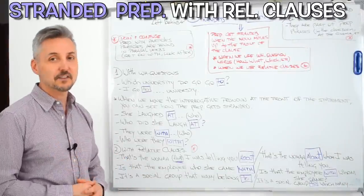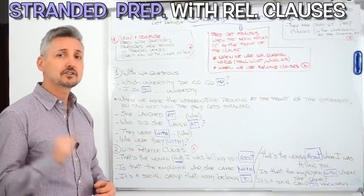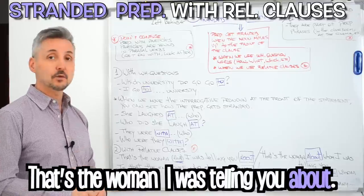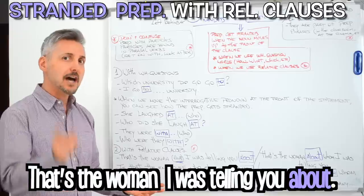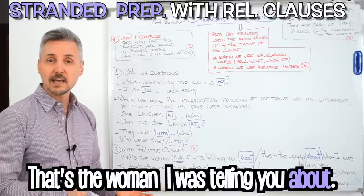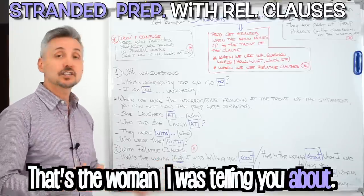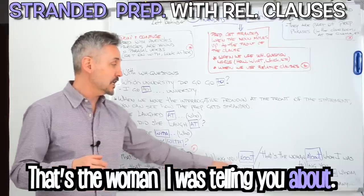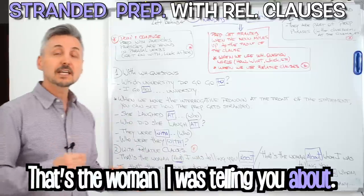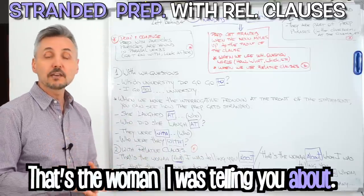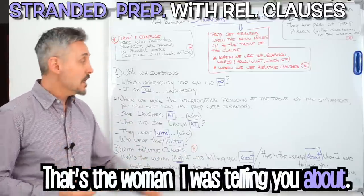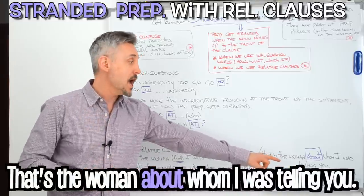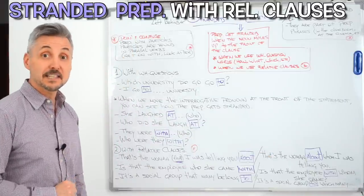Stranded prepositions with relative clauses. Let's look at my introductory example: "That's the woman that I was telling you about." That "that" you can leave it out — I left it out in my introductory example. "About" is the stranded preposition. Formally, I could even say: "That's the woman about whom I was telling you."